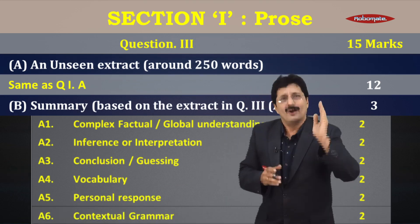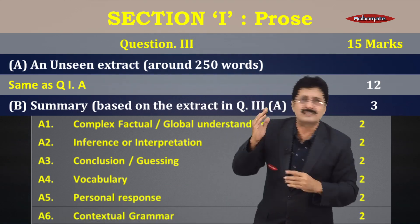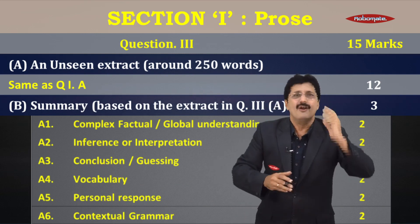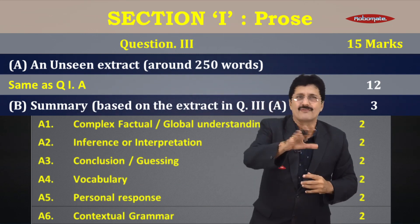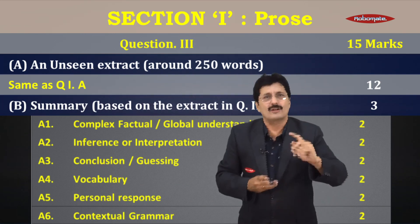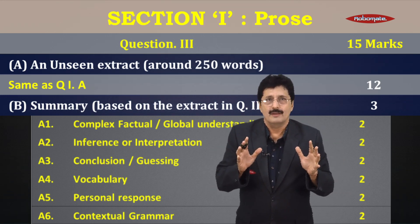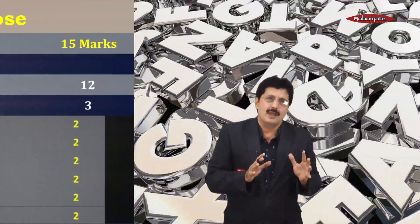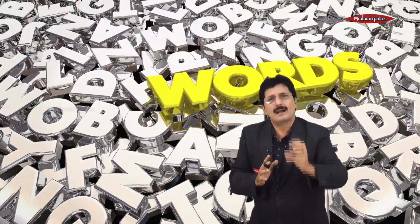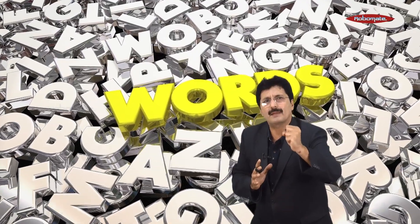Activity one: complex factual global understanding. Activity two: inference interpretation. Three: conclusion guessing. Four: vocabulary. Five: personal response. And six: contextual grammar, two marks each. Now if you can clearly see, vocabulary and grammar together make up 15 marks in the paper.